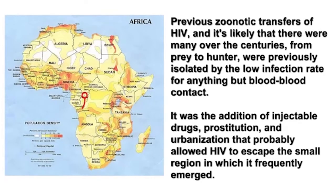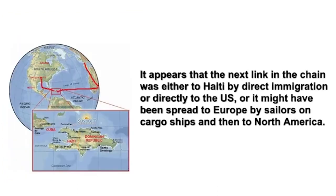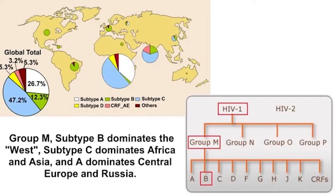Previous zoonotic transfers of HIV — and it's likely that there were many over the centuries, from prey to hunter — were previously isolated by the low infection rate from anything but blood-to-blood contact. It was the addition of injectable drugs, prostitution, and urbanization that probably allowed HIV to escape the small region in which it frequently emerged. It appears that the next link in the chain was either to Haiti by direct immigration, or directly to the U.S., or it might have been spread to Europe by sailors on cargo ships and then to North America. The emergence in the major cities of Europe was slightly after the disease was documented in New York and San Francisco. Asia and Russia may have been infected by a second wave of emergence, as their subtype profiles are markedly different than the European and North American subtypes.